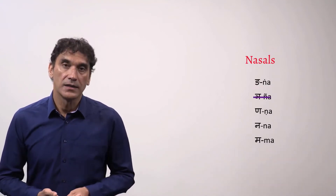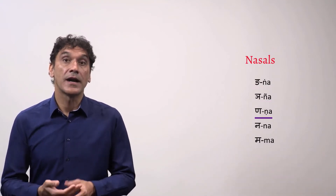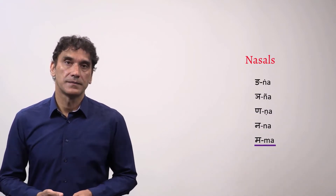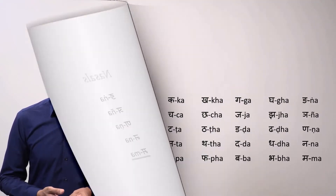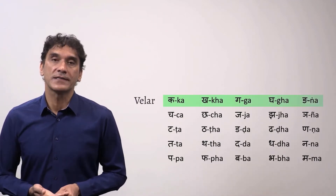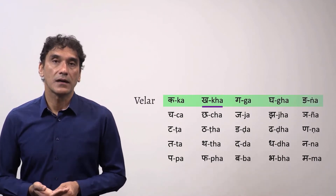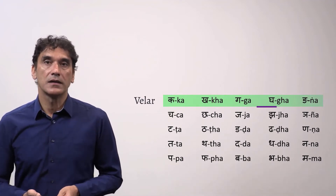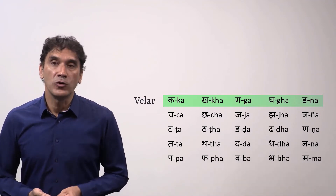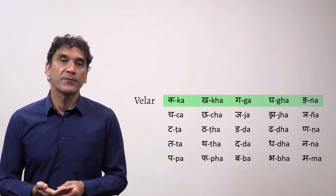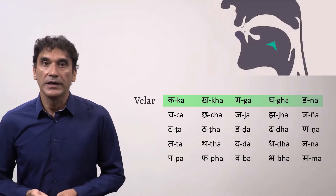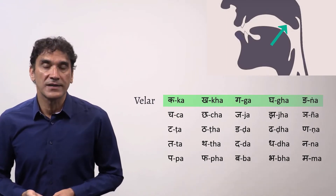Now let's take the rows. The first row is the velar sounds. They are made in the velum, or the soft palate, in the vocal apparatus at the back of your throat. You can see where they are produced in this diagram.